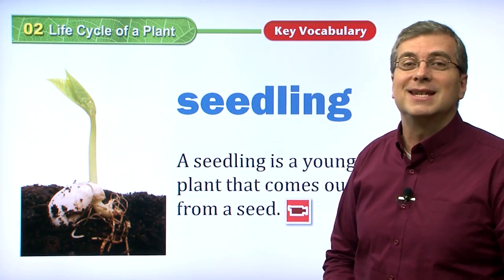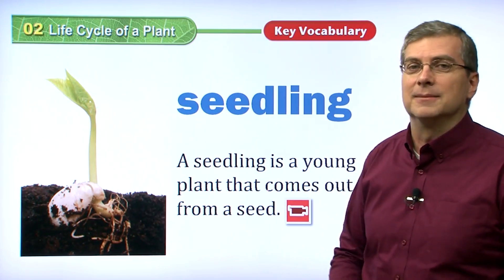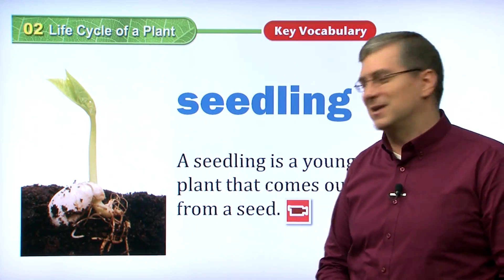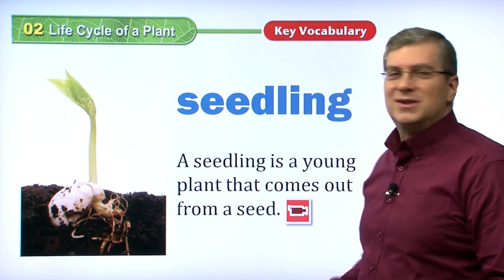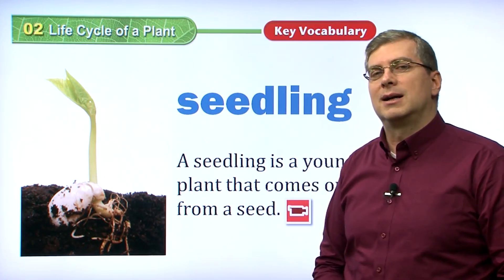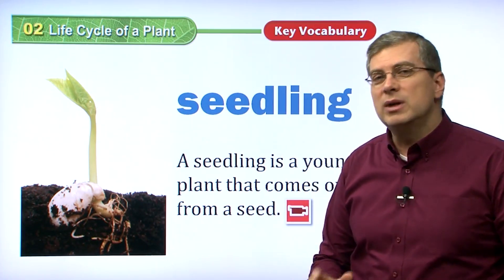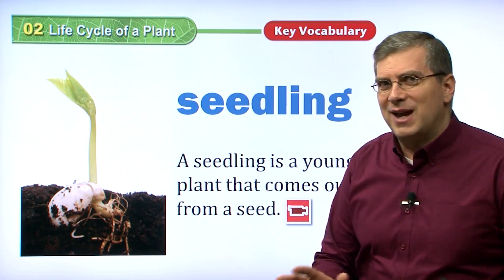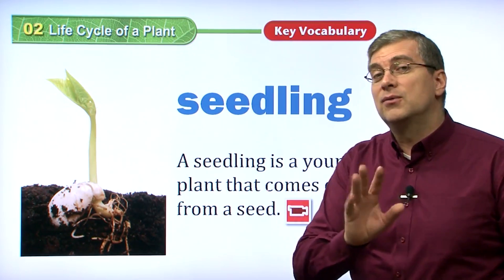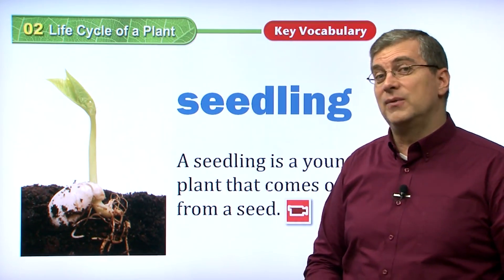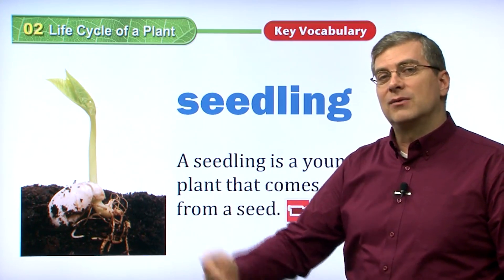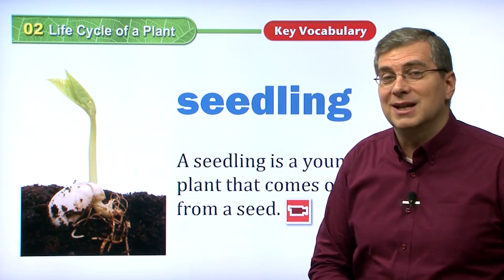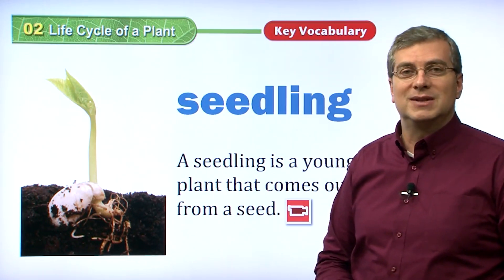Practice: seedling. A seedling is a very young plant, like a baby plant, that comes out from a seed. It's a very small plant that comes out. It's really amazing if you have time and you can watch it, but usually we don't have that kind of time. If we use a special video technique and take a picture once in a while, then put it all together, it's very amazing to watch a seedling grow from a seed.